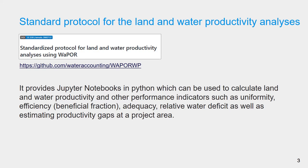This protocol provides Jupyter Notebooks in Python which can be used to calculate land and water productivity and other performance indicators such as uniformity, efficiency, adequacy, relative water deficits, as well as estimate productivity at a project area.